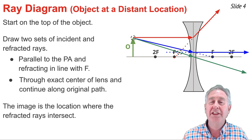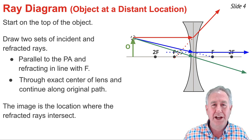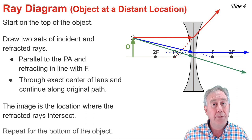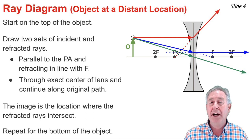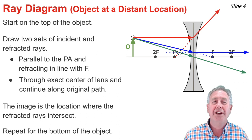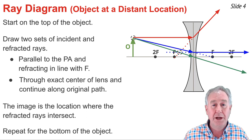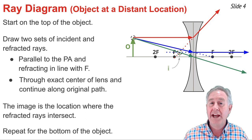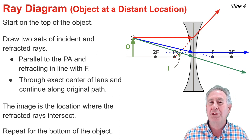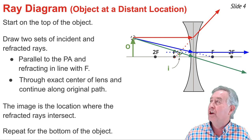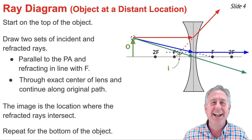To find the complete image of the object, you repeat the process for the bottom of the object. The shortcut is that if the object is resting upon the principal axis, the image of the bottom of the object is also located upon the principal axis. So the complete image is drawn from the principal axis up to the intersection point found by the original three refracted rays, labeled I.